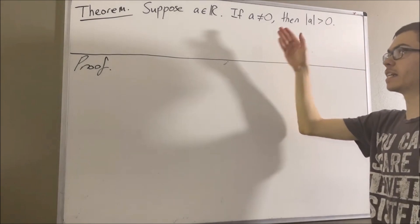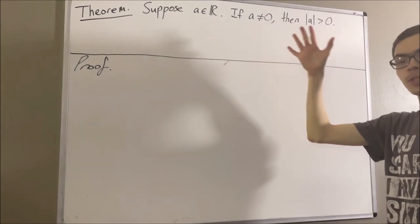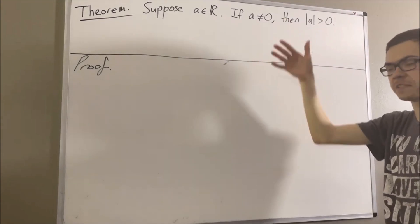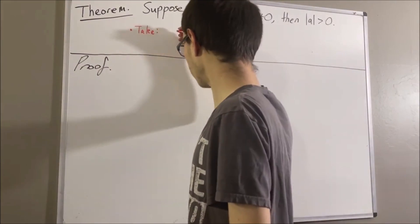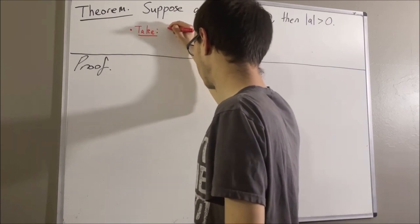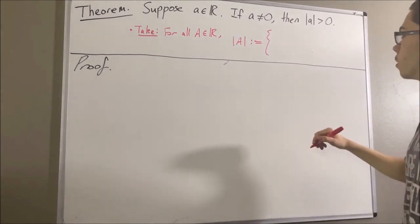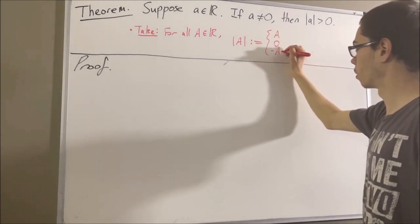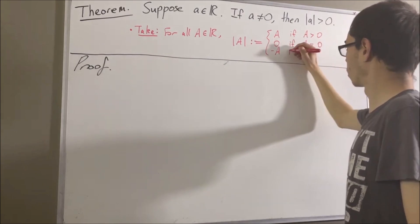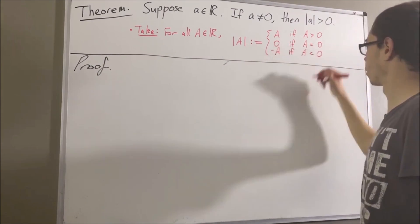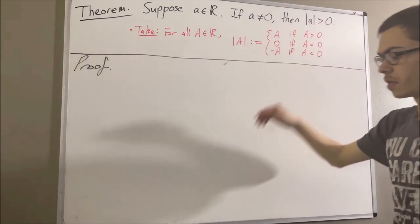Now we're going to say that the absolute value of a real number is defined as follows. So now let's prove the theorem.